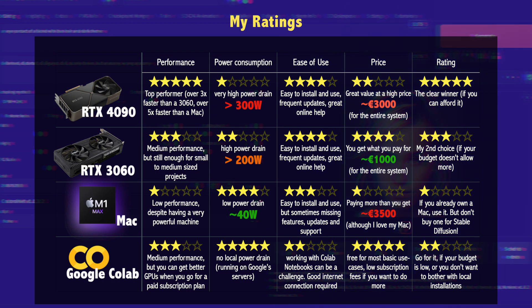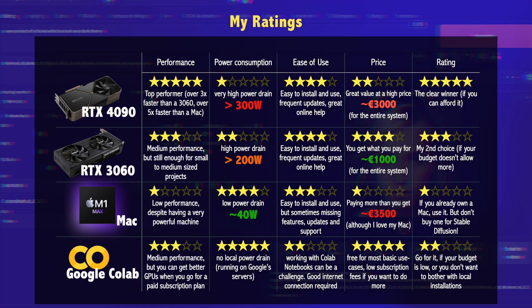So here's my rating. The 4090 has the best performance by far, but it also has the greatest power consumption and comes at a hefty price. Still, I think it's the clear winner for me. With a tighter budget, I would go for the 3060 or something similar, or maybe consider Google Colab — even if it can be quite a challenge at first when you're not used to the Colab notebooks.